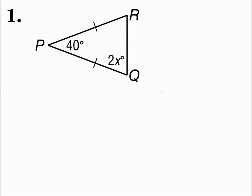Find the value of each variable. Number one: this triangle has two congruent sides and we're given some angle measures. When a triangle has two congruent sides, the angles opposite those sides are also congruent. So if angle Q is 2x degrees, then angle R also has a measure of 2x degrees.